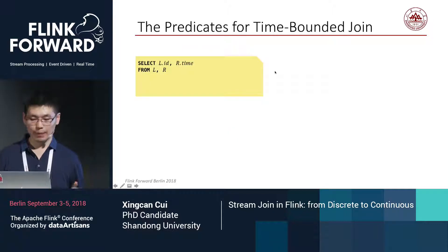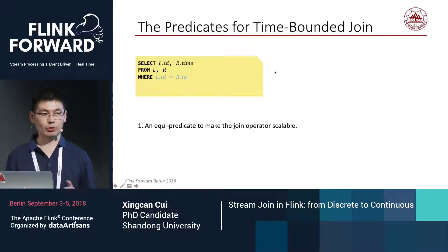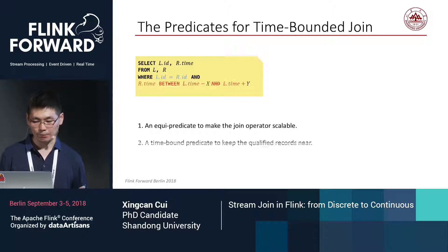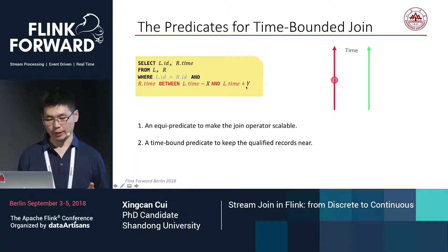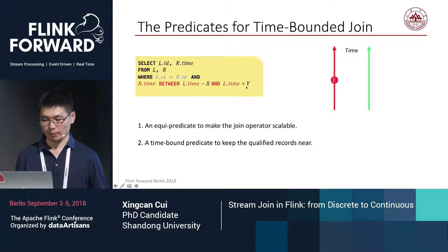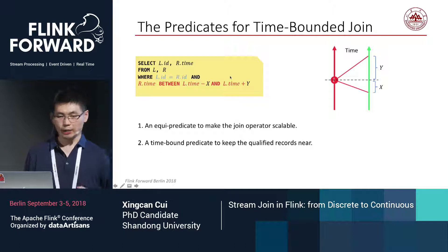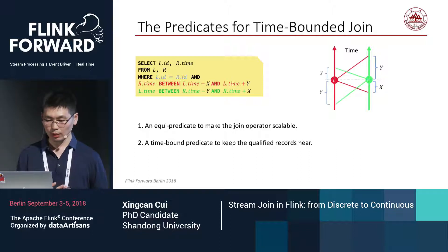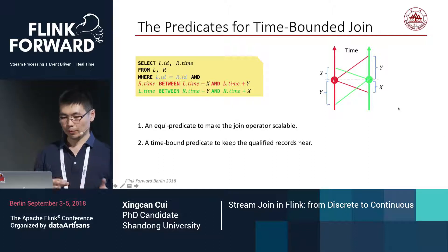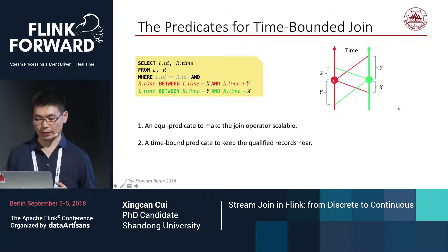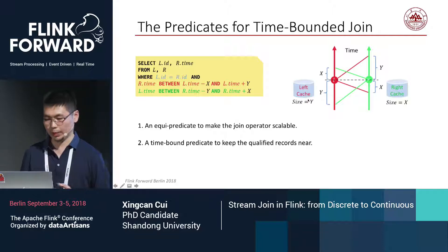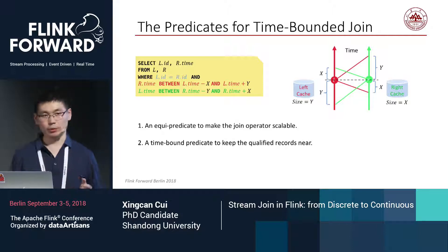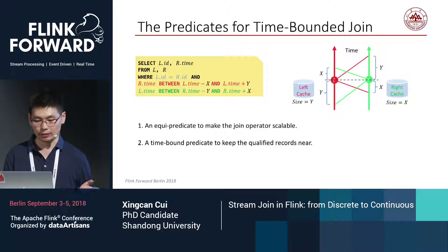To activate a time-bounded join, we first need an equi join predicate to enable the join operator to work in parallel. We also need a time-bound predicate: given a row from the left stream, the qualified rows from the right stream must fall within a time span decided by x and y values. The time bound is actually a symmetric predicate and can be rewritten in another form on the other side. The cached record size is also decided by the x and y values — not the number of rows, but a time span of the cached rows, similar to a time window size.